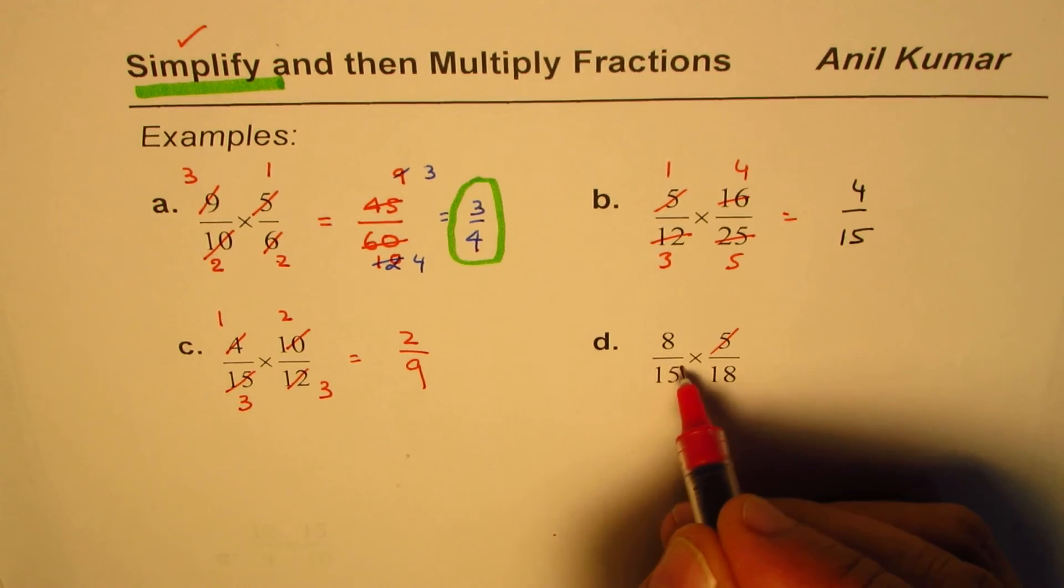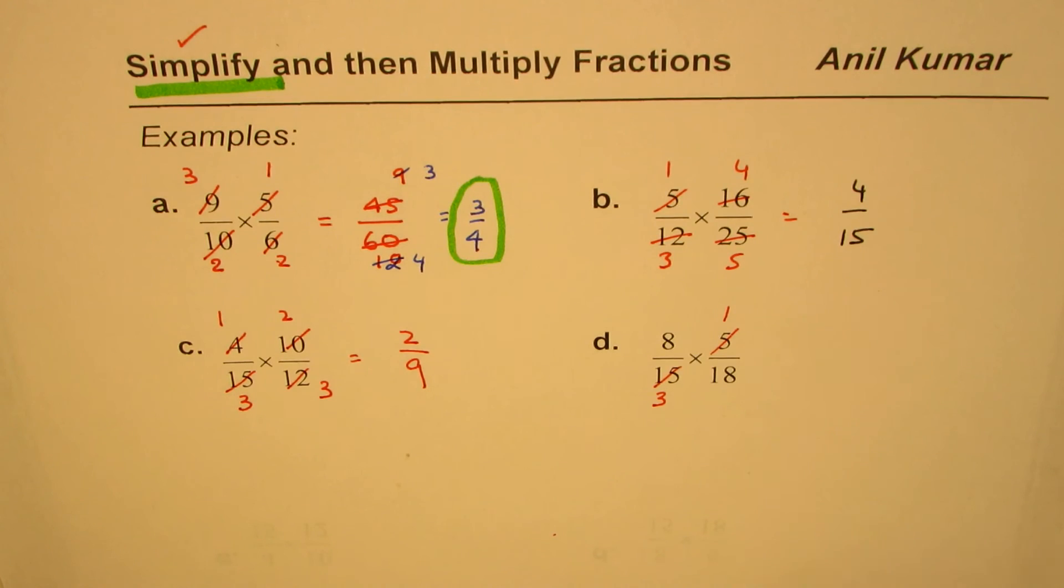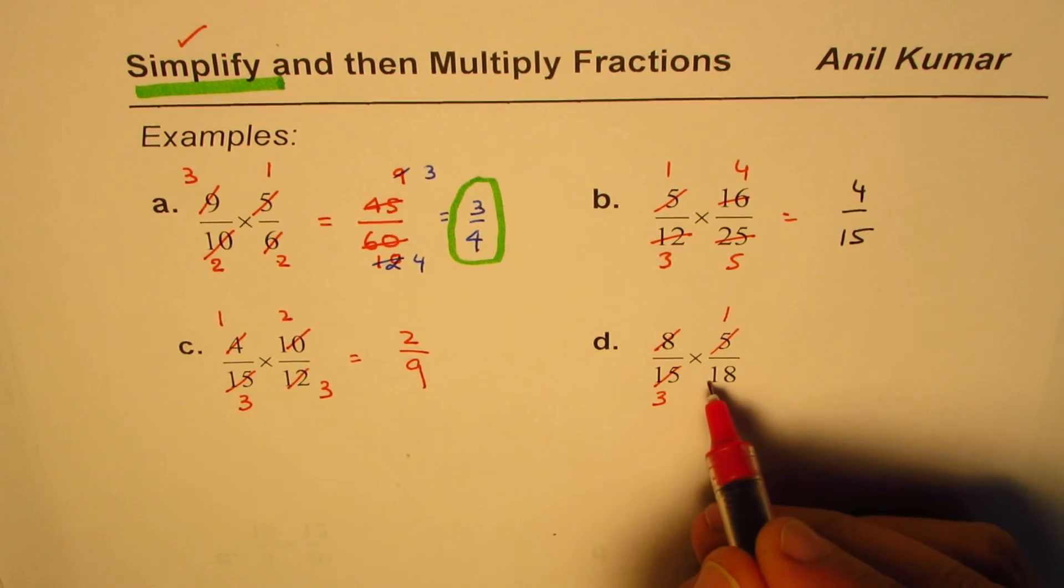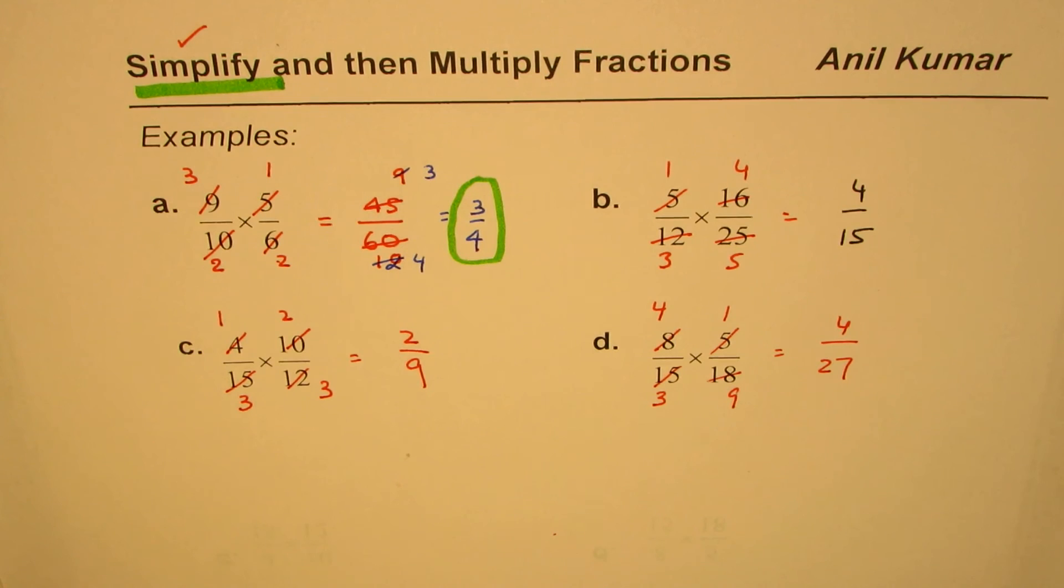In the last one, 8 over 15 times 5 over 18: 5 goes into 15 three times, and these two can be divided by 2, so we get 4 here and 9 there. So we have 4 over 27 as our answer. Try to simplify and then multiply or divide the fractions.